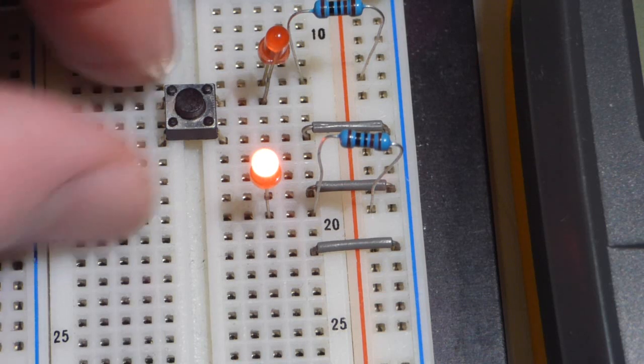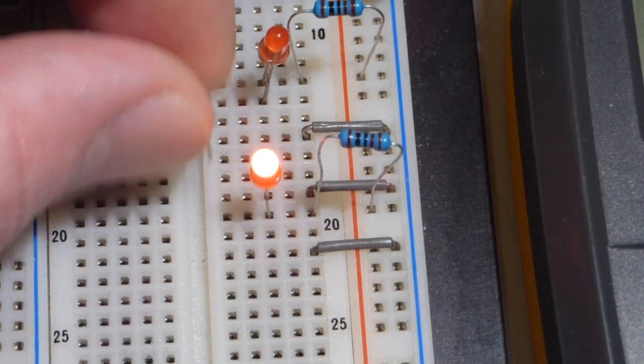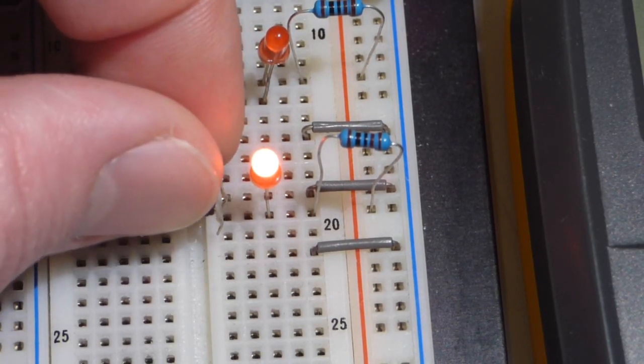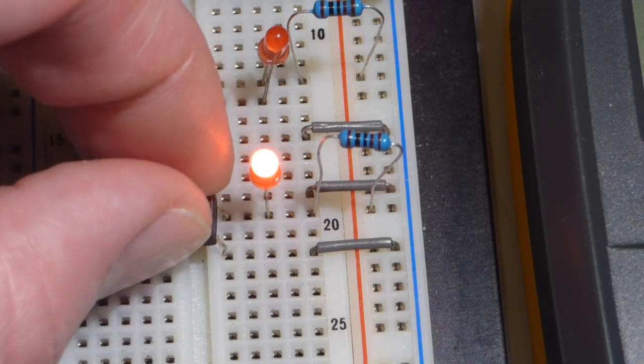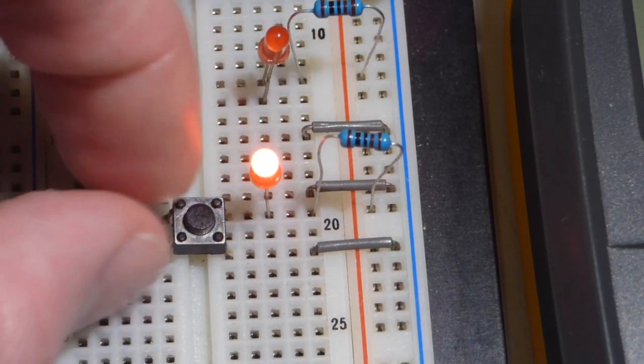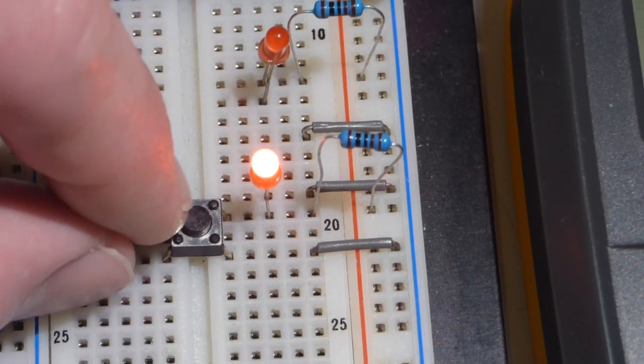So for the NOT gate, we're going to move this here, down here. So plug that into the row with the LED, and then the other one to the negative rail. Now, so the LED is on.